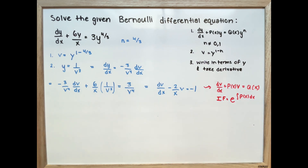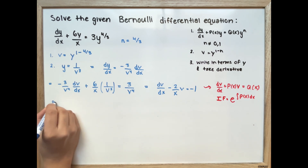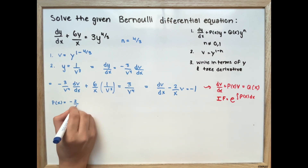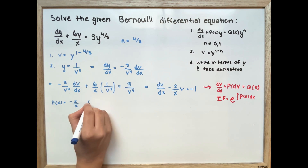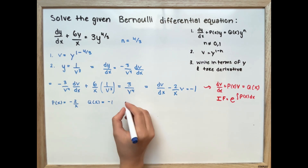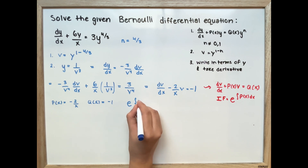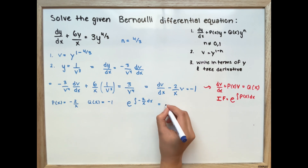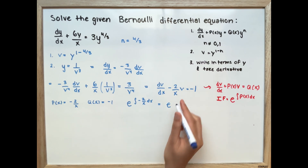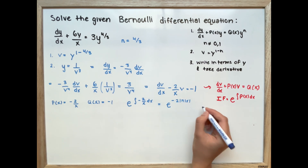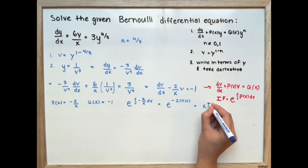In this case, p(x) is equal to negative 2 over x, and q(x) is equal to negative 1. Our integrating factor is e to the integral of negative 2 over x dx, which equals e to the power of negative 2 ln|x|, which simplifies to x to the power of negative 2.